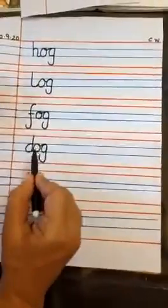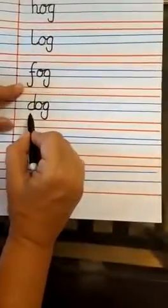So, kids, hog—always remember to join the tails. Join the tail. Log. Fog, letter F has no tail, so it will not join with the O. But we will write them together. Then, dog.